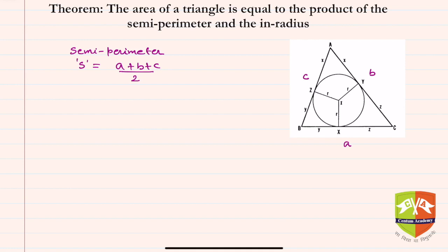In-radius is nothing but the radius of the inscribed circle. You can see there is a circle inscribed in triangle ABC, and the radius of that circle is r. So r is the in-radius of triangle ABC.